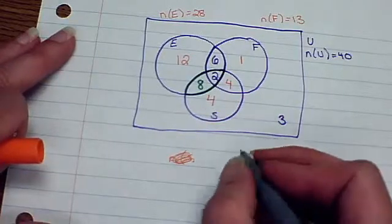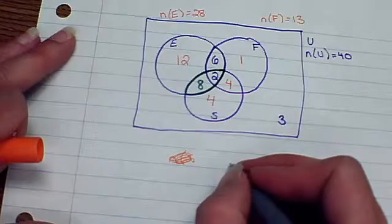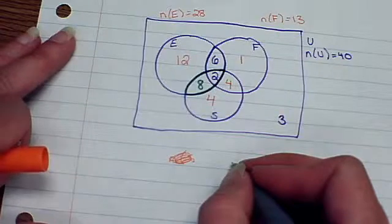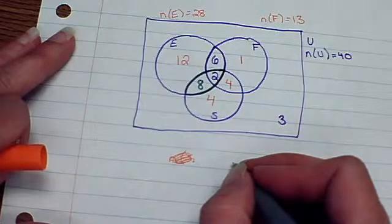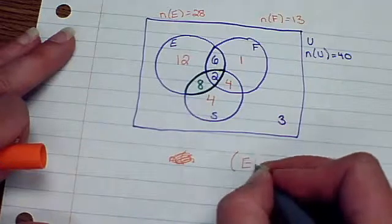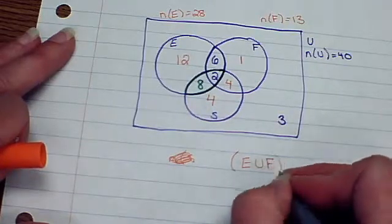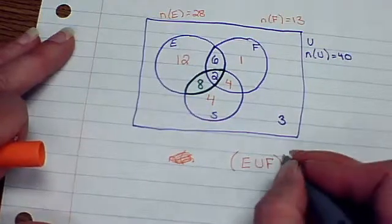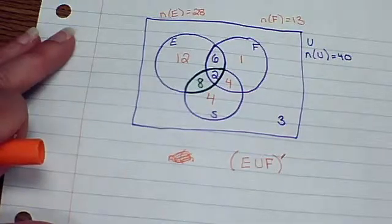The next part says, on your diagram, shade the students who do not study English or French. But they actually show the notation as well. This is English, union, French, the complement of that.